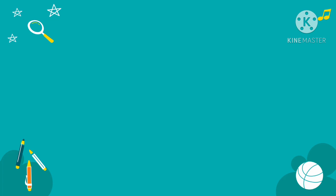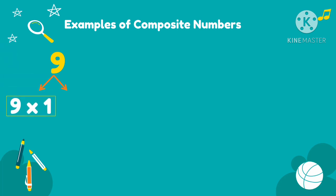Here are some examples of composite numbers. So we have 9. What are the factors or numbers that when we multiply them will give us an answer of 9? So we have 9 times 1 and 3 times 3. Then another one is 36.